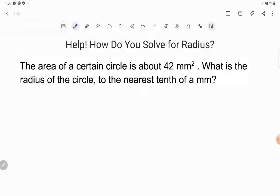It says the area of a certain circle is about 42 square millimeters. What is the radius of the circle to the nearest tenth of a millimeter? So first of all, what are they looking for me to do or to find? Let's take a look at that in the question. What is the radius of the circle? They're asking me to find the radius of a circle. And what do I know? I know the area of this certain circle. The area of the circle is about 42 square millimeters.